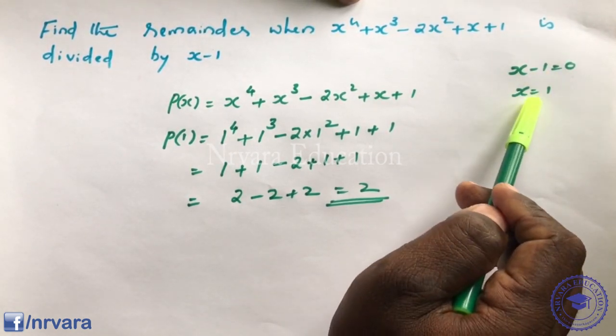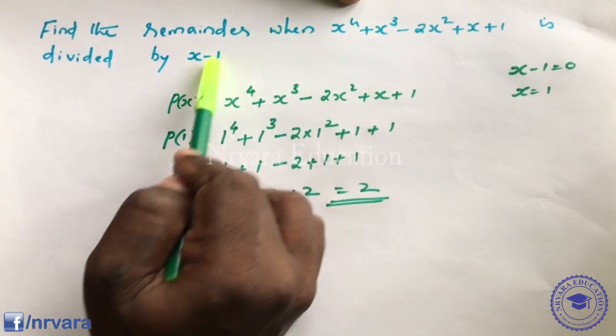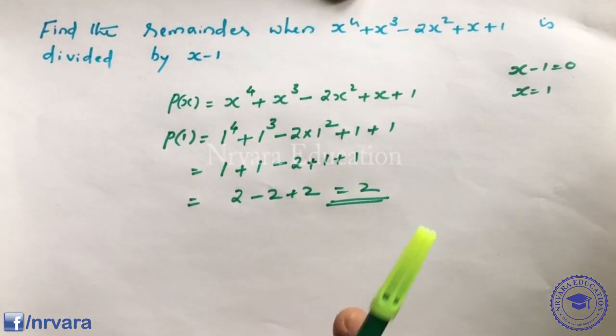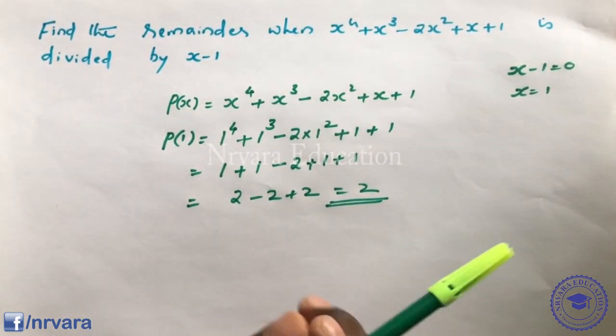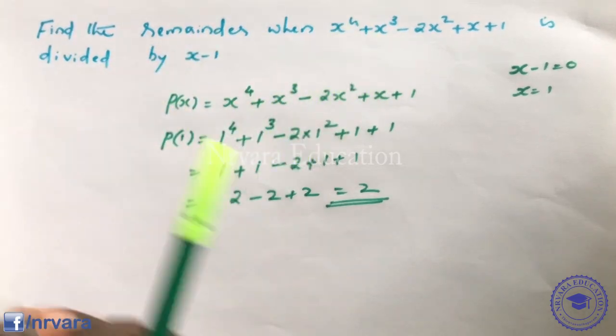Substitute the value of x into the polynomial to find the remainder. That gives us the remainder value.